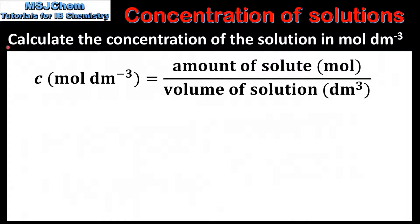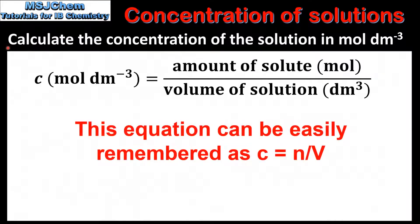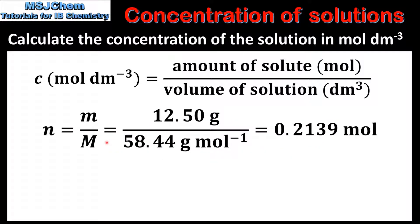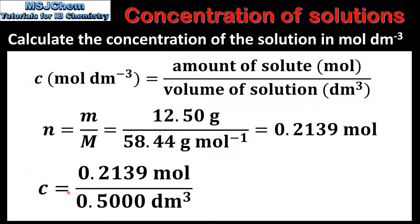Next we will calculate the concentration of the same solution in moles per cubic decimeter. To do this we divide the amount of solute in moles by the volume of the solution in cubic decimeters. The first step is to convert from mass in grams to amount in moles. The mass of sodium chloride is 12.50 grams and the molar mass of sodium chloride is 58.44 grams per mole. Dividing the mass by the molar mass gives the amount in moles, which is 0.2139.